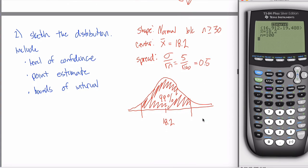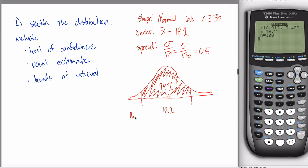Hit enter. This is the output. 16.912 up to 19.488. These are the bounds of my interval. The third of the three things I want to include in my picture. Step one. Step two. Step three and then we're done.